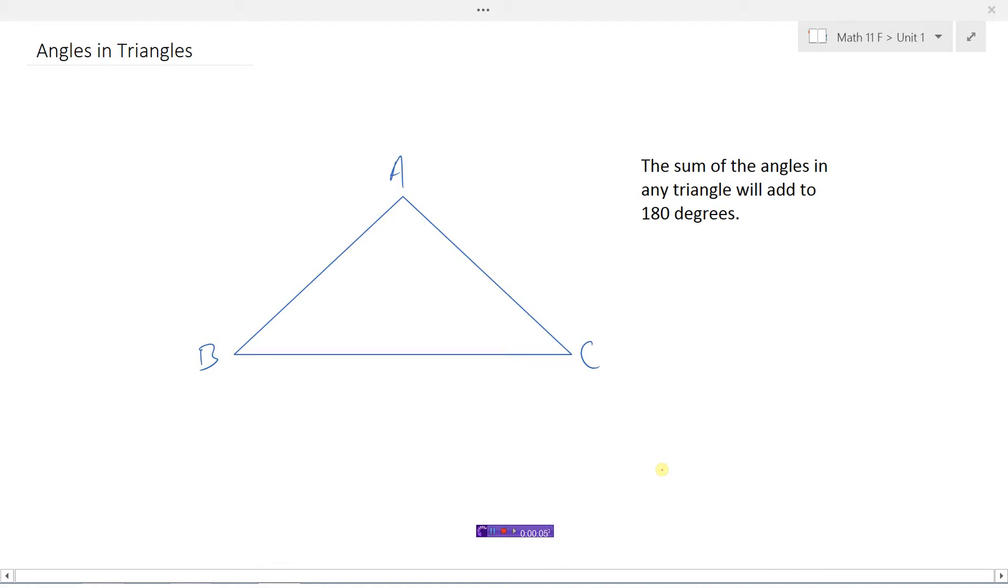We're going to look now at the properties of angles in triangles. Of course a triangle will have three sides, and therefore it'll have three angles: A, B, C. So here's what we know about triangles. The sum of the angles in any triangle will add to 180 degrees.